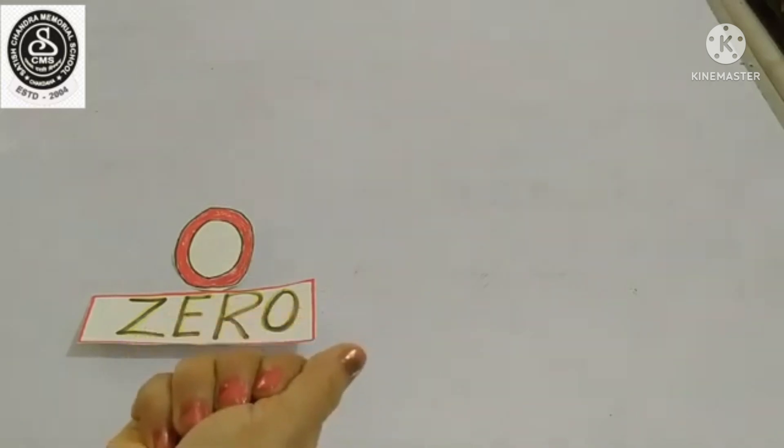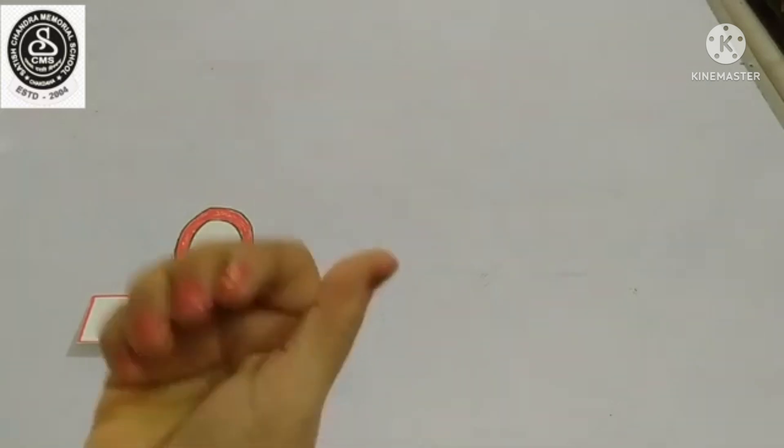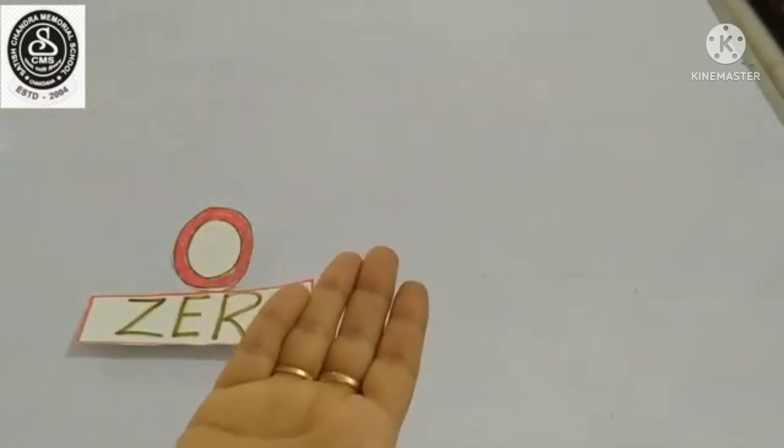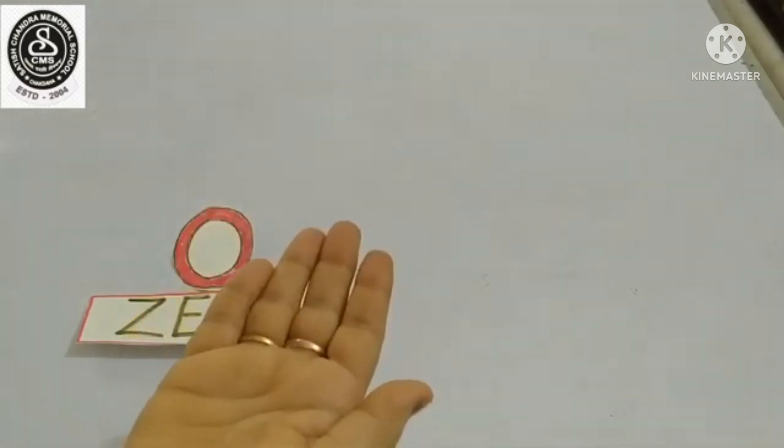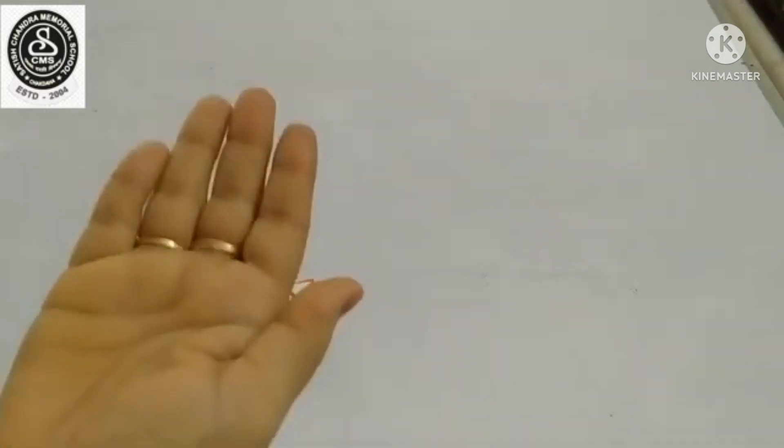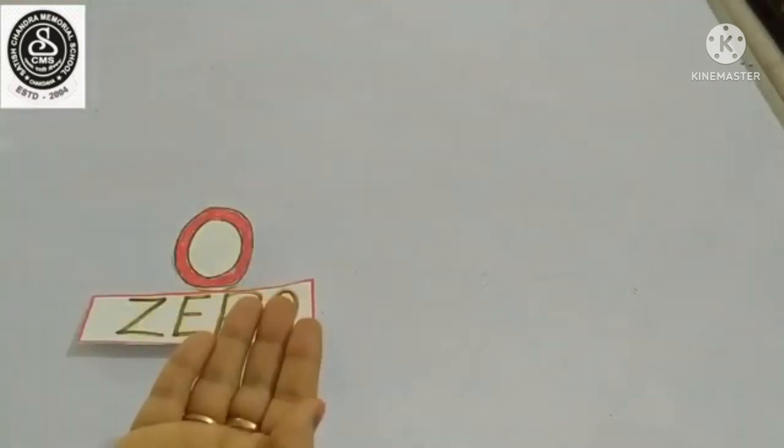Zero means no objects. If I am saying zero toffees in my hand, that means I have no toffee. So, zero means nothing. Zero means nothing.